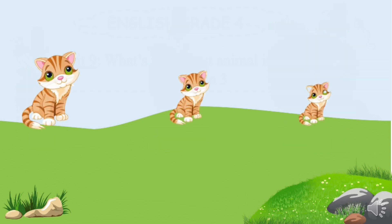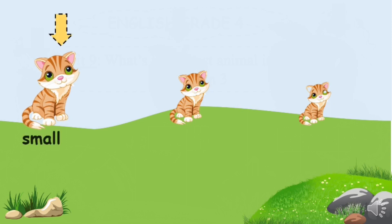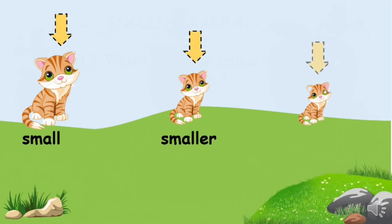How about these pictures? These are cats. Look at the first one — it's small, right? The second one is smaller. And the last one is the smallest cat. Perfect. Now repeat after me: small, smaller, smallest.